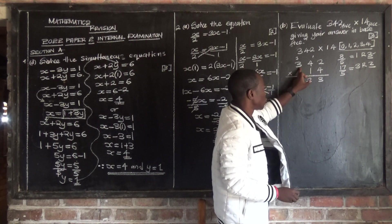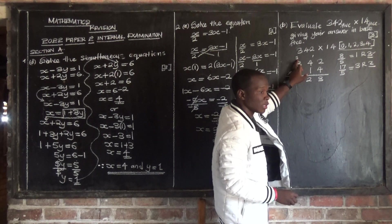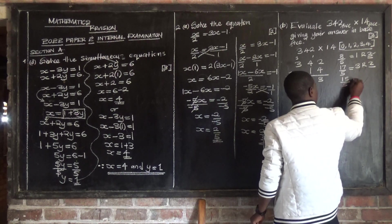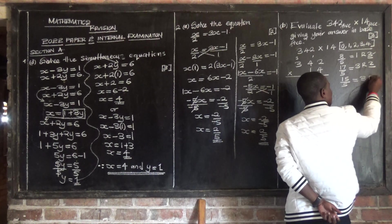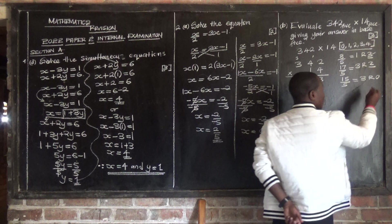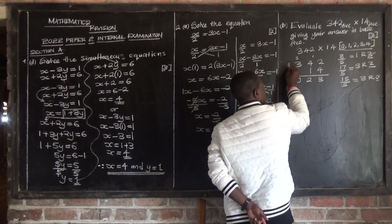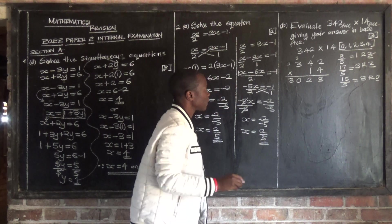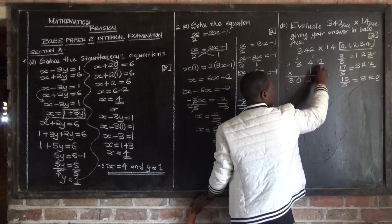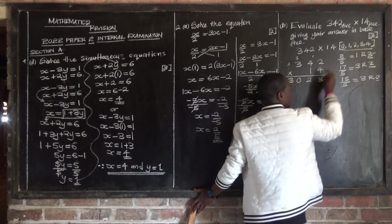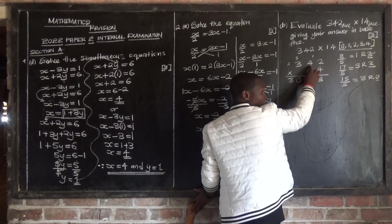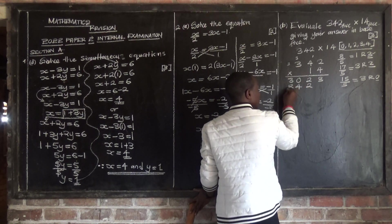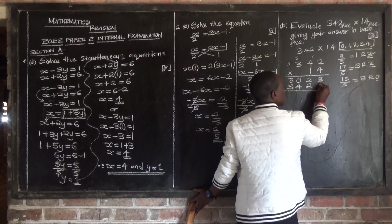Then 4 times 3 is 12, plus the carried 3 is 15. 15 divided by 5: 5 goes into 15 exactly 3 times with remainder 0. Write remainder 0 and carry forward 3 — just drop this 3. Now for 1 times 2: that's 2, write 2. 1 times 4 is 4, write 4. 1 times 3 is 3, write 3.